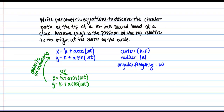Let's think about the easy things first: the center and radius of our circle. As the second hand moves around it traces out a circle, so we'll take the center to be at the origin, the point (0, 0). The radius is just the length of the second hand, which in this case is 10 inches.